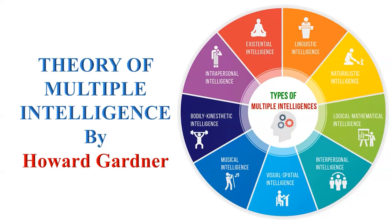The last intelligence is naturalistic intelligence, later added by Gardner. It involves a strong connection to the natural world, including an understanding and appreciation for nature, as well as the ability to categorize and identify patterns in the natural environment. Biologists, botanists, and environmentalists often exhibit this form of intelligence.